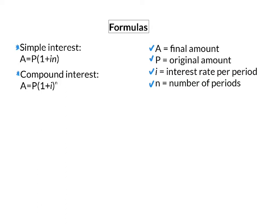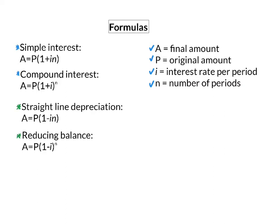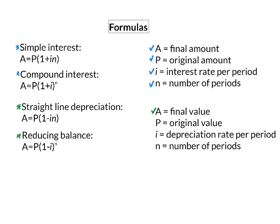Next, we have the formulas for depreciation. Firstly, the straight line depreciation, and then the reducing balance depreciation. In both of these formulas, A is once again our final amount, or this time final value, P is our original or starting value, i is the depreciation rate per period, and n is the number of periods.